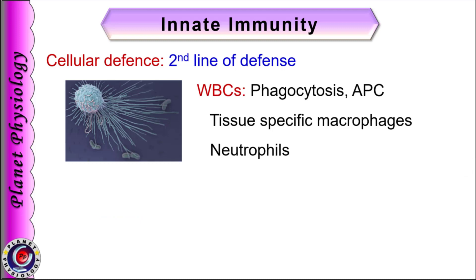If microbes succeed to penetrate the physical barrier, cells like tissue macrophages and circulating WBCs immediately detect and remove them. For example, tissue-specific macrophages are present in all the barrier tissues — like histiocytes in skin, Kupffer cells in liver — and these cells immediately phagocytose the invading organisms. They also release various chemokines that attract circulating WBCs, which further help in phagocytosis as well as to initiate inflammatory response. Macrophages not only phagocytose the microbes but also present these antigens to the lymphocytes to activate specific immune response. Thus, they act as antigen-presenting cells, often abbreviated as APC.